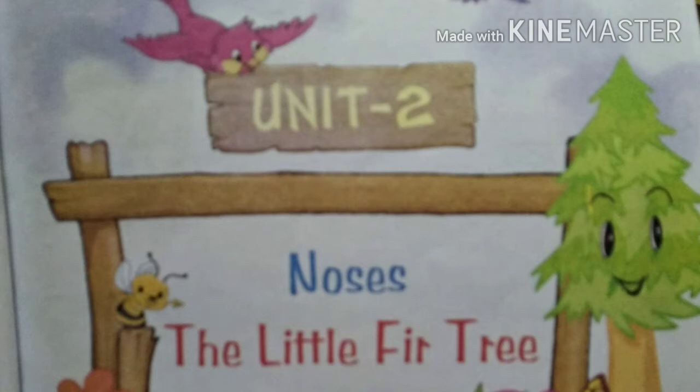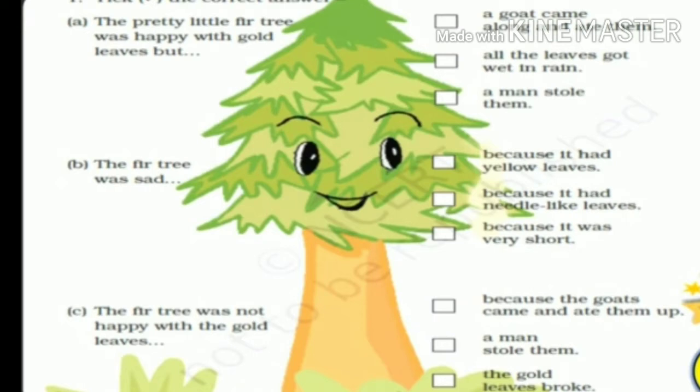Now we continue with Part 2 and there are a few exercises to do. In this exercise you need to pick the correct answers. Three options are given for each question. Your first question is: the pretty little fir tree was happy with gold leaves, but... The three options are: a goat came along and ate them; all the leaves got wet in rain; a man stole them.